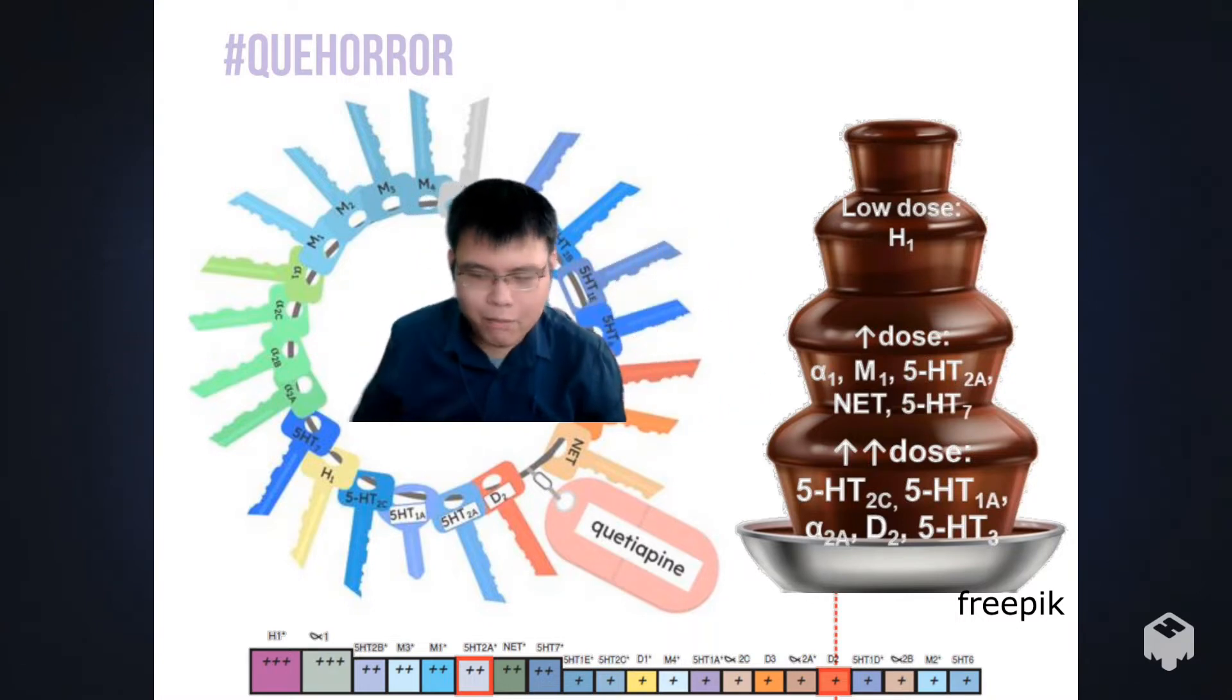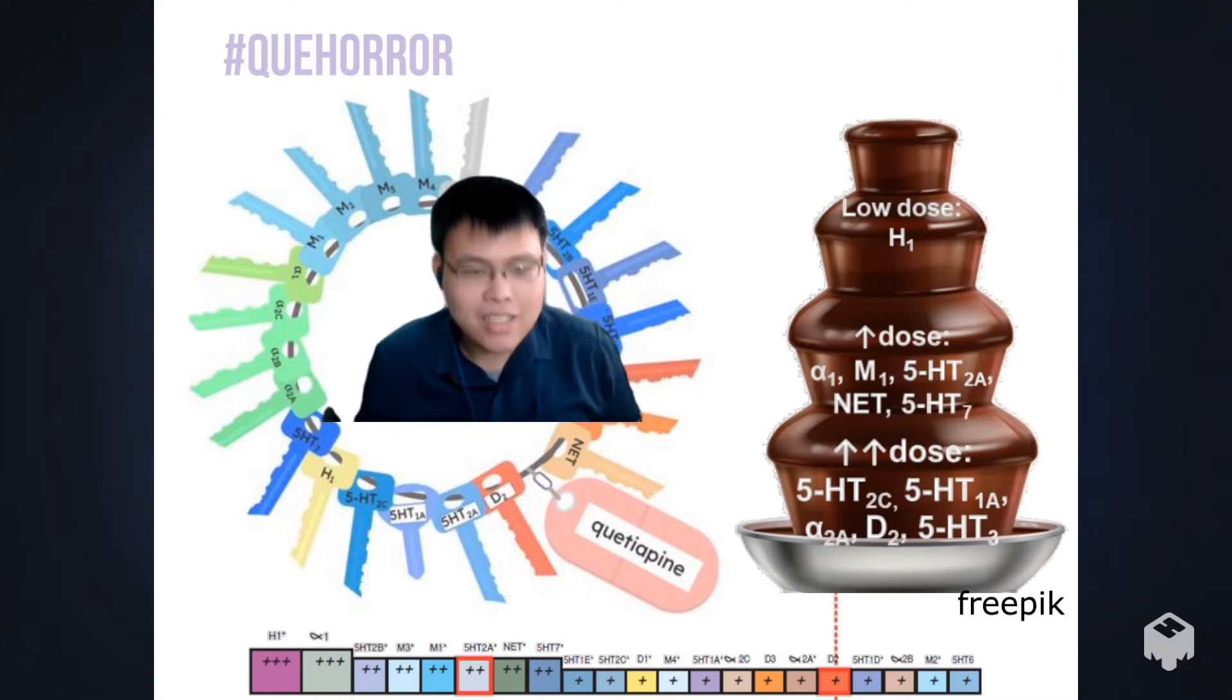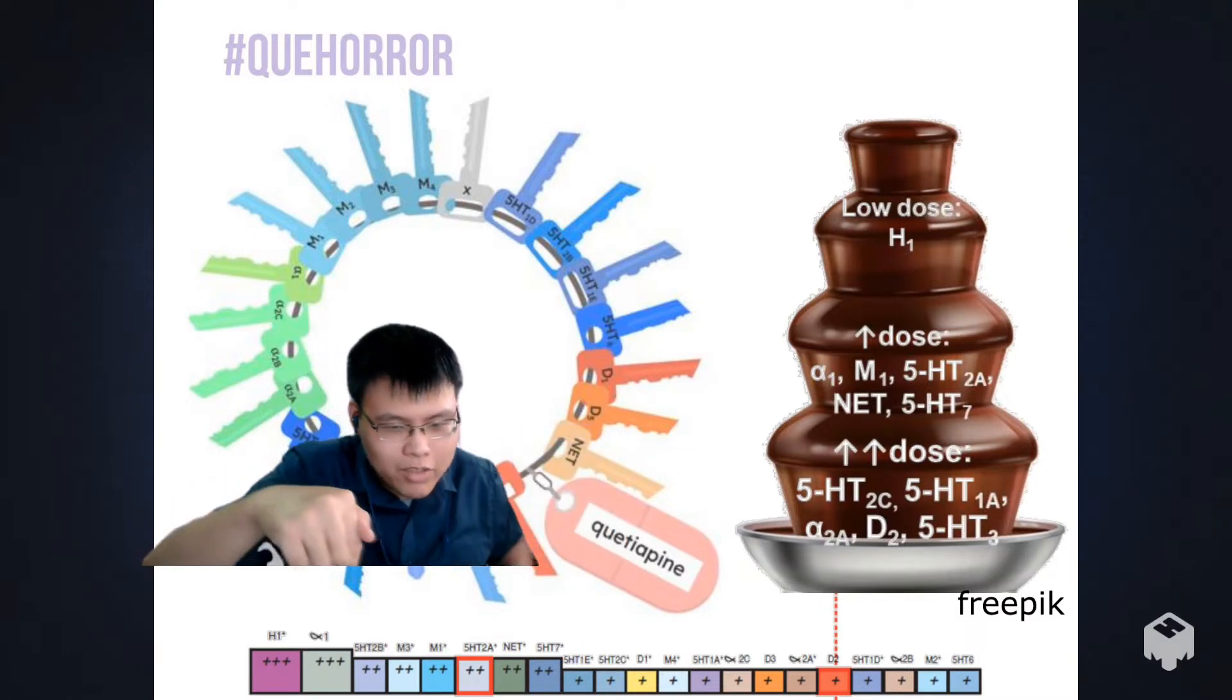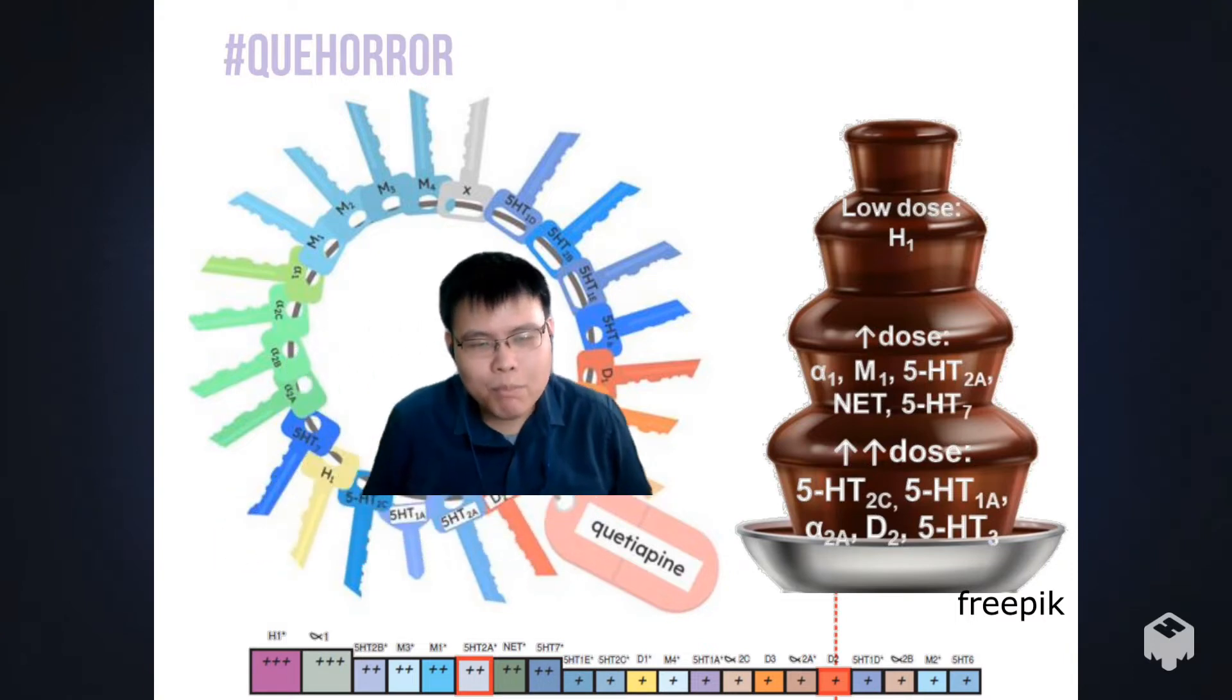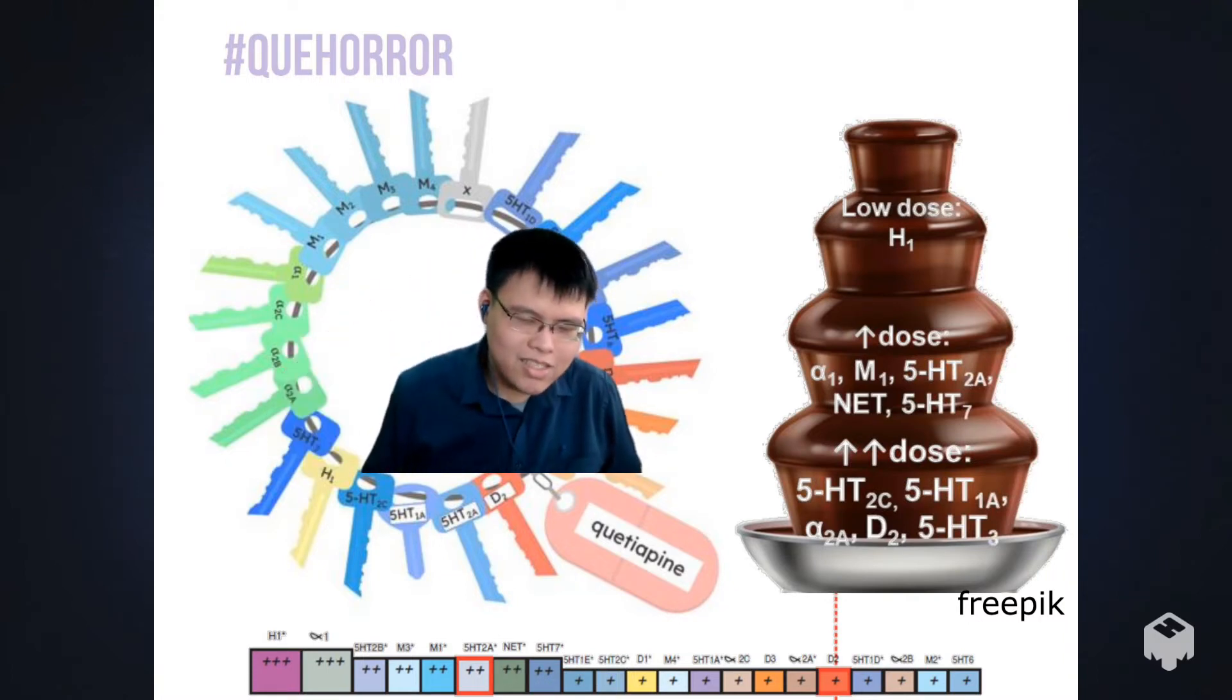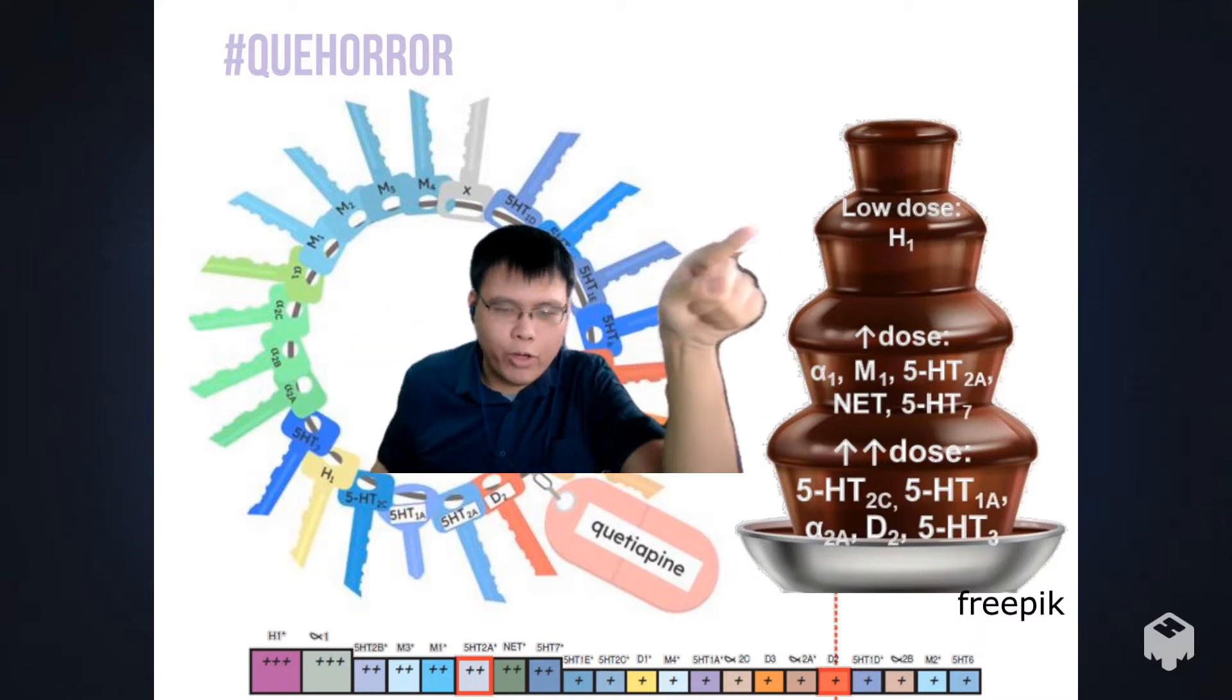Remember, this is a chocolate fountain. We are not just looking at the top layer—you got to look at all of this. Again, poor pharmacology leads to poor therapeutics. First of all, at the low doses it's not just the H1 receptor being bound. Looky here, you also have the alpha-1 receptor—that is orthostatic hypotension, falls, and fractures.